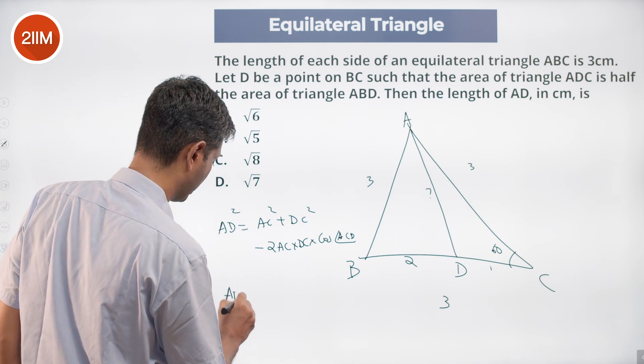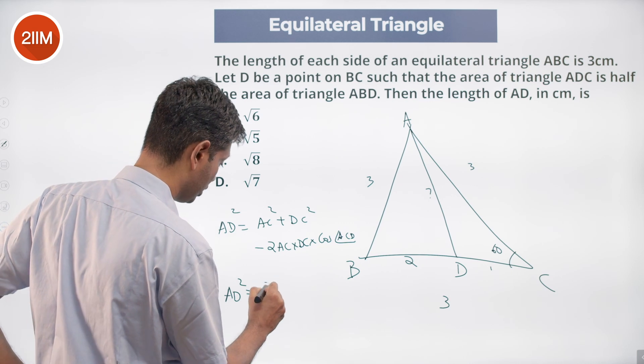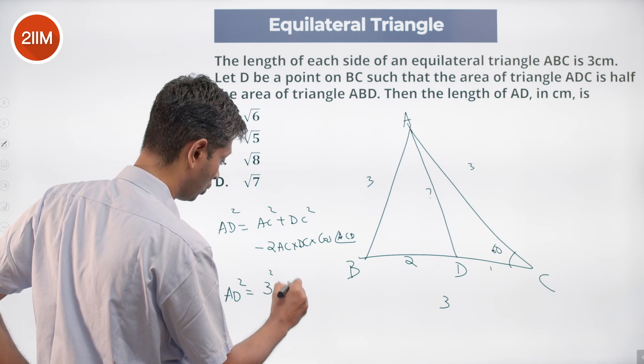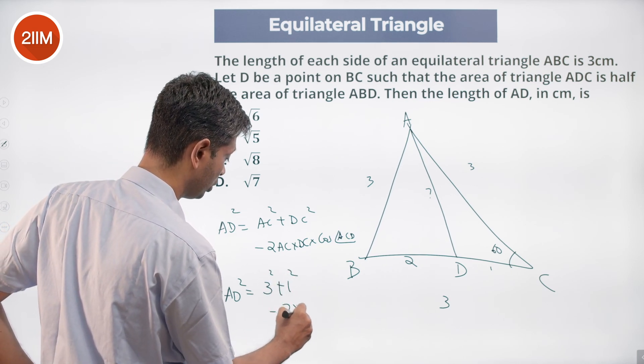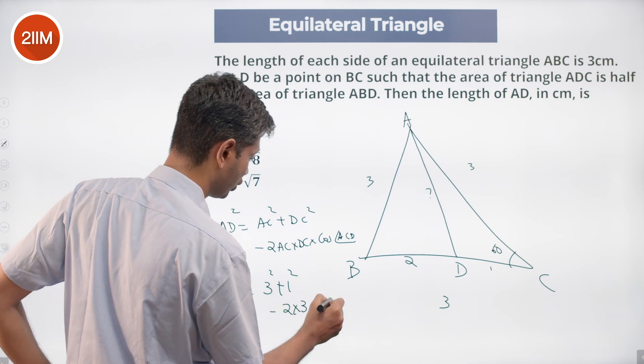AD squared equals AC squared, which is 3 squared, plus DC squared, which is 1 squared, minus 2 times 3 times 1 times cos 60, which is 1/2.